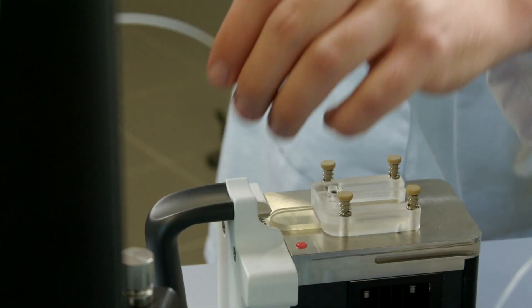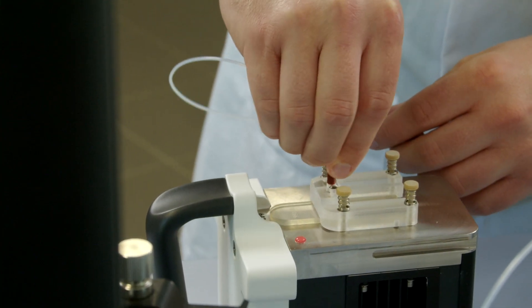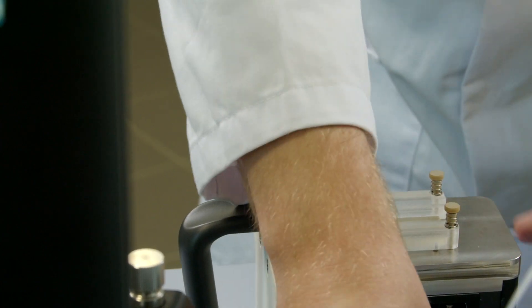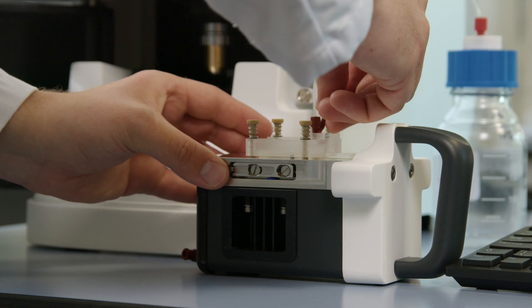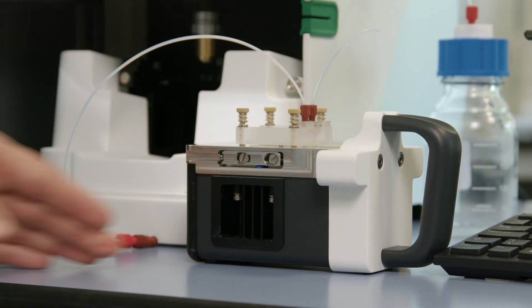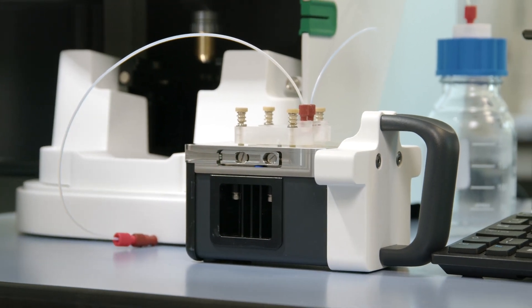Once we've got our screws in we can now put in the inlet tube which the sample will go into the measurement window through. And then finally our outlet tube which the waste will go out through. Now our laser module is ready for the sample.